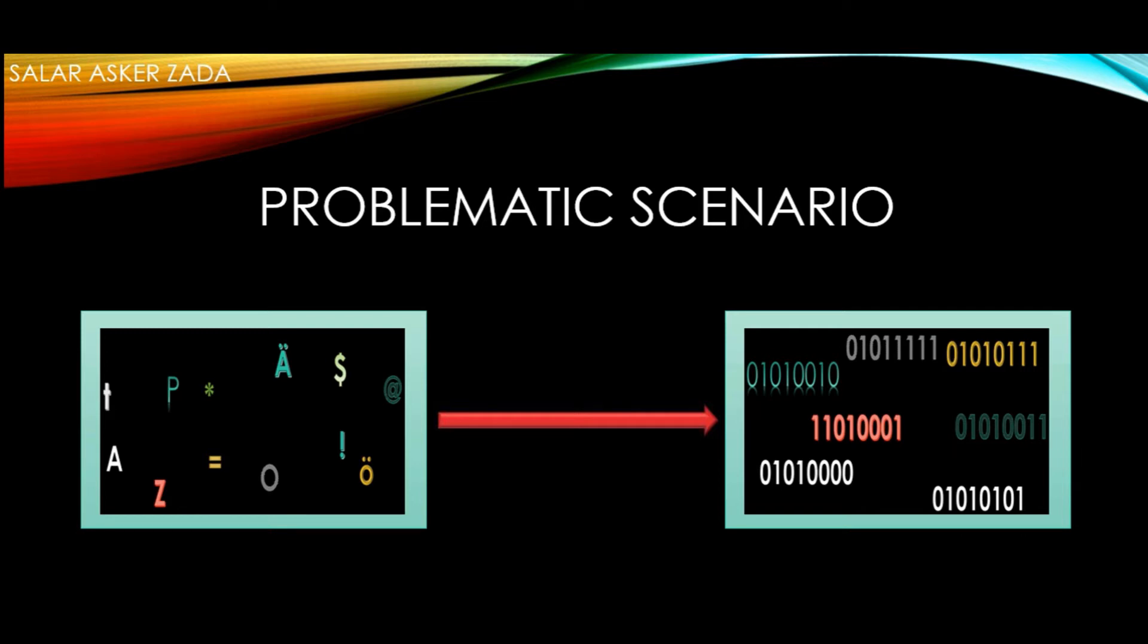But the problem is, we cannot convert symbols directly into zeros and ones. Because zeros and ones are actually numbers and belong to the binary number system. But a number from one number system can be converted into another number system. For example, a decimal number 65 can be converted into a binary number, and the binary of 65 can be converted back into decimal.